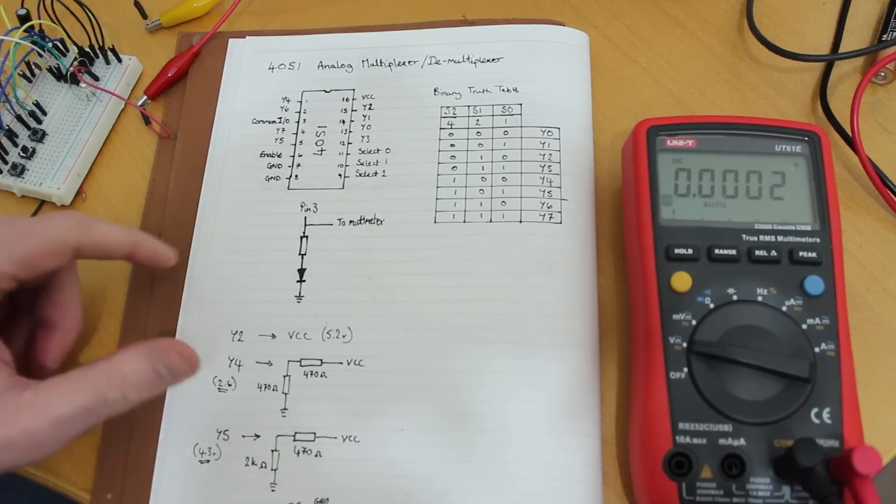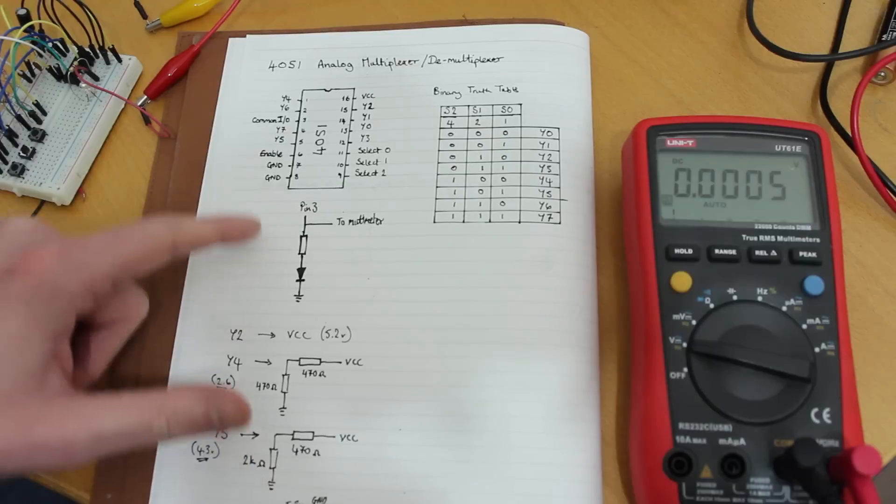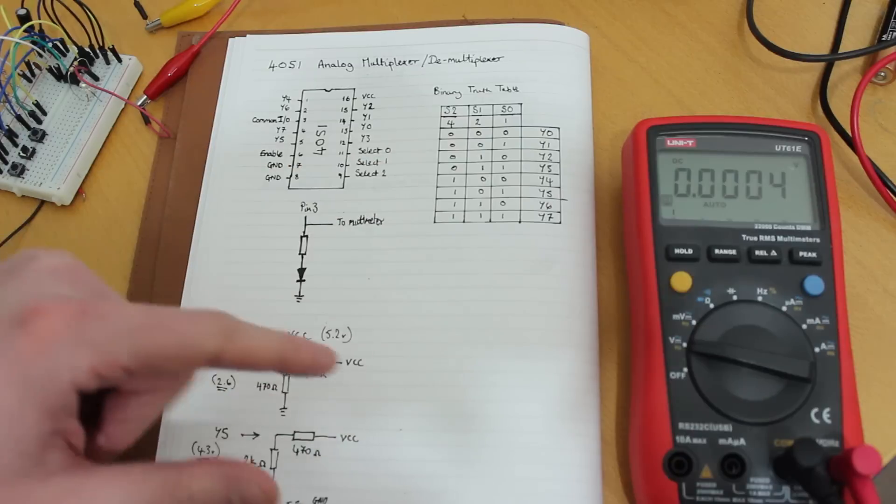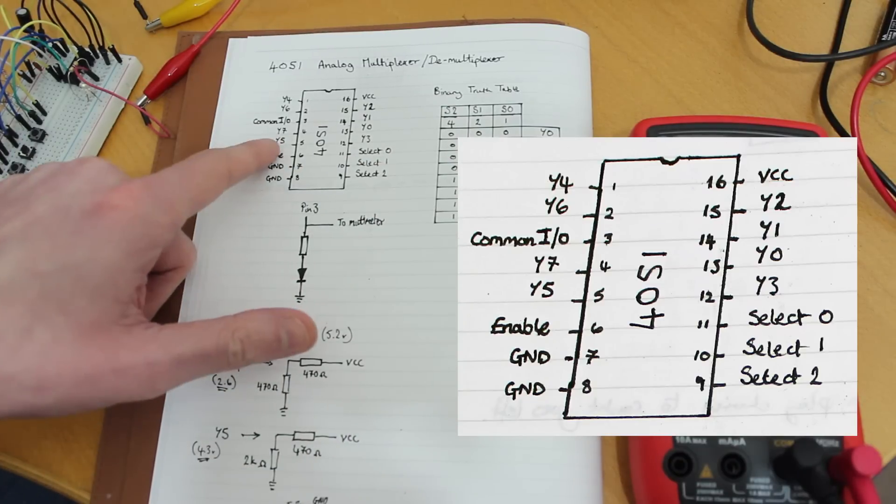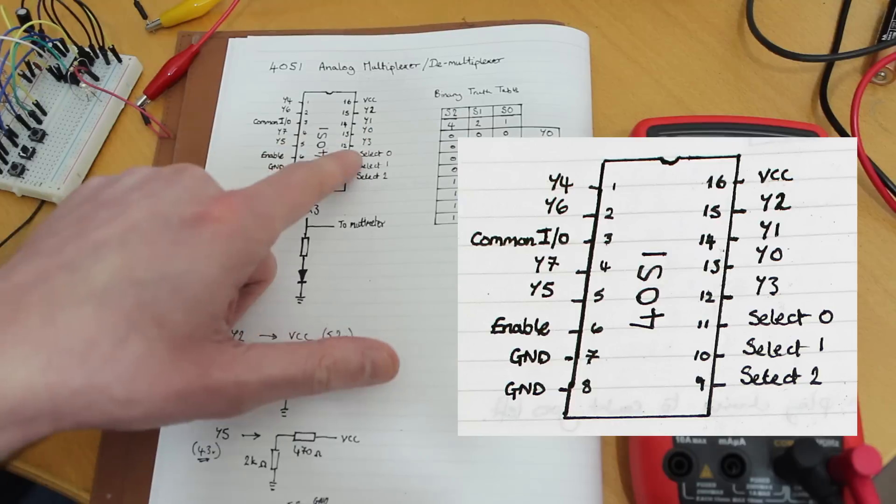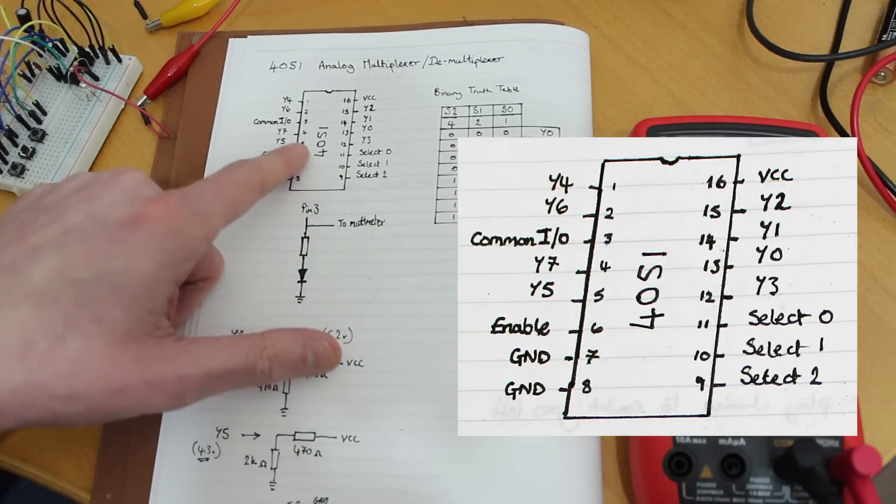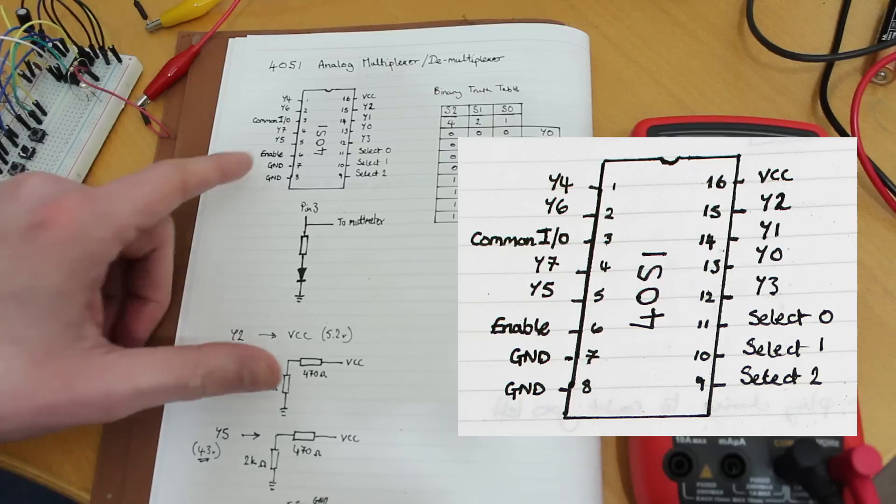Essentially it's an analog switch. It will give you one common output input and also eight inputs and outputs you can use. So it's like switching these eight inputs or outputs over to this common one.